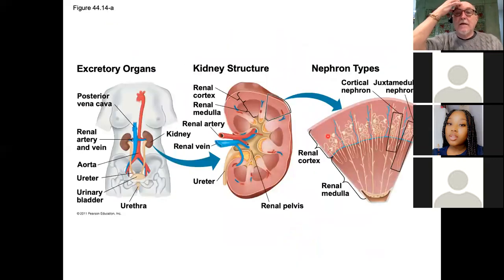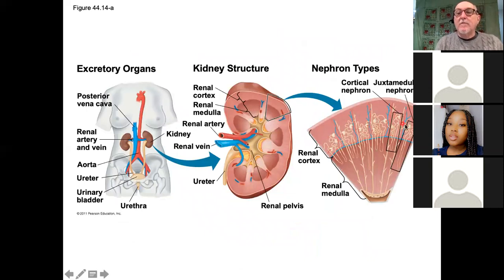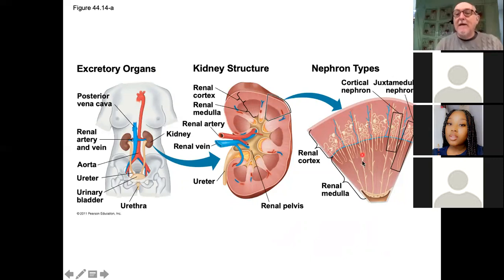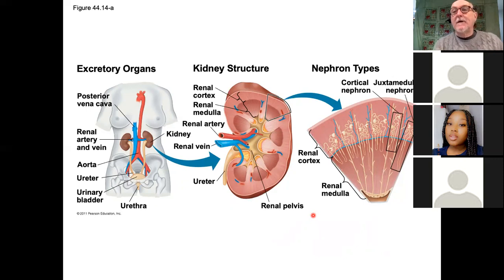Most of the filtration takes place in the renal cortex, and most of the processing takes place in the renal medulla, where the collecting ducts run through and eventually join together in the renal pelvis. We'll leave it there for today and talk about kidney function next time. Remember the extra credit opportunity, and I'll try to post a reminder about that.